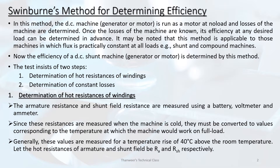Now, Swinburne's method for determining efficiency. In this method, the DC machine — whether a generator or motor — is run as a motor at no load, and the losses of the machine are determined. Once the losses are known, its efficiency at any desired load can be determined in advance. It may be noted that this method is applicable to those machines in which flux is practically constant at all loads.